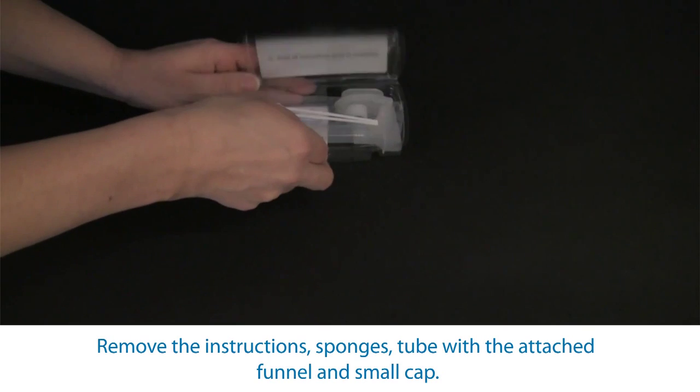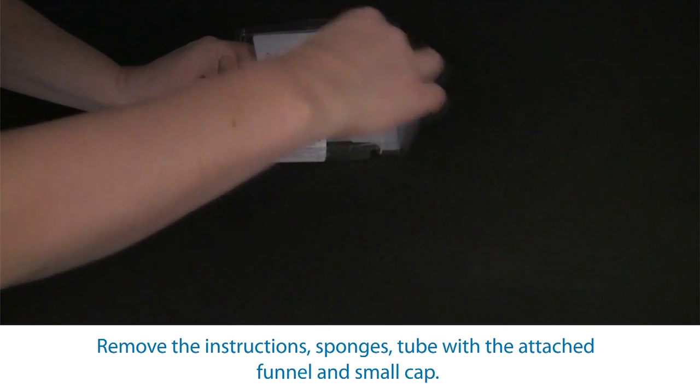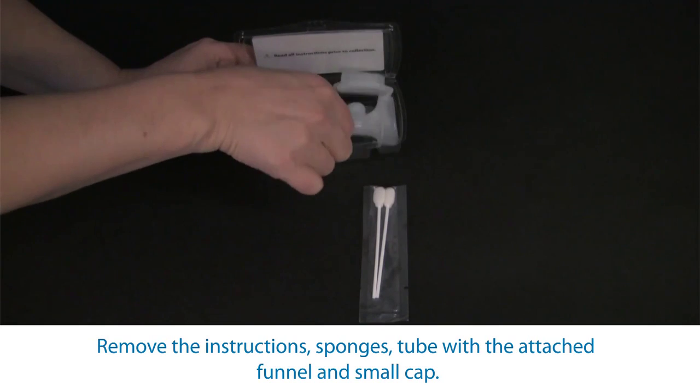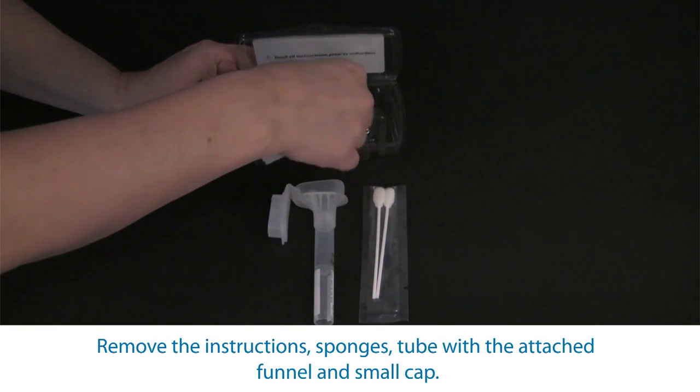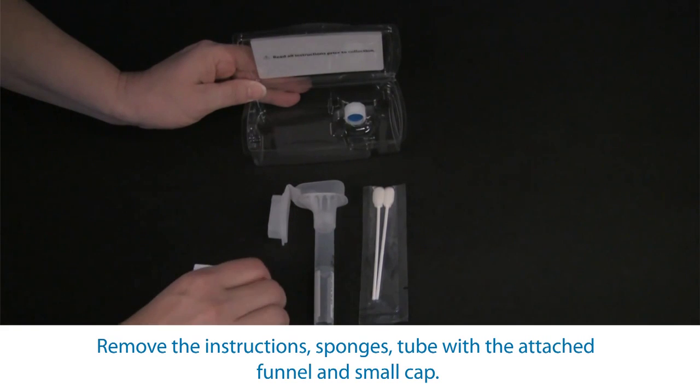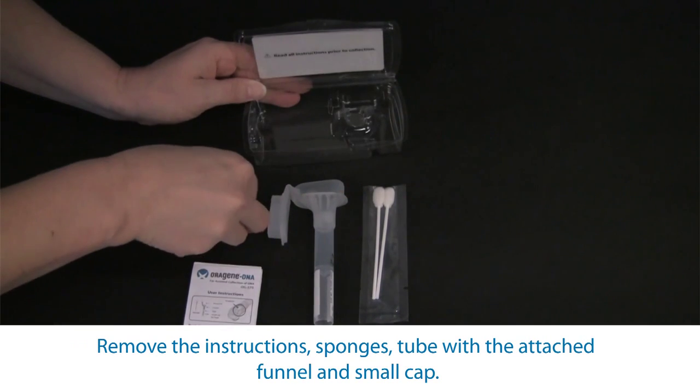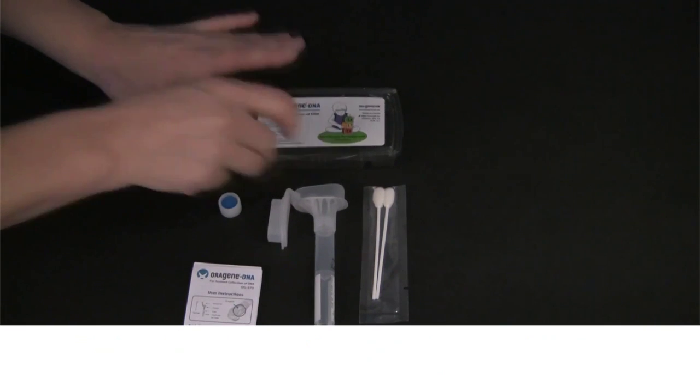Included inside the kit are user instructions, two sponges, a collection tube with attached funnel and a small cap. Do not allow those requiring supervision to handle the sponges or small cap as they may present a choking hazard.